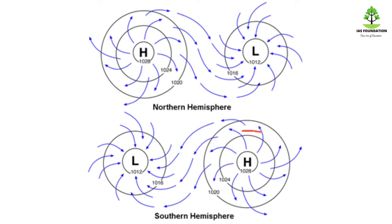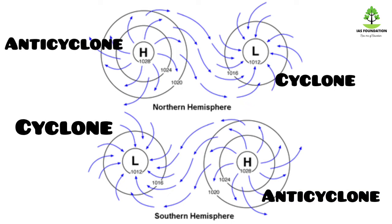If you look at the high pressure area, the wind is moving. For the northern hemisphere, wind around high pressure is clockwise, and for low pressure it is anti-clockwise. For the southern hemisphere, the cyclone rotates in the clockwise direction.